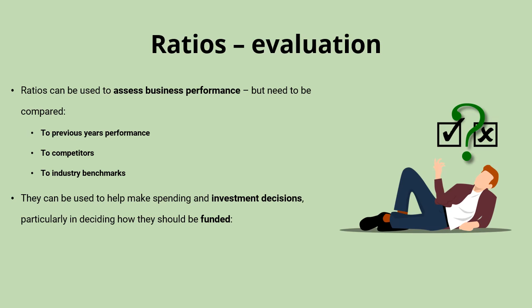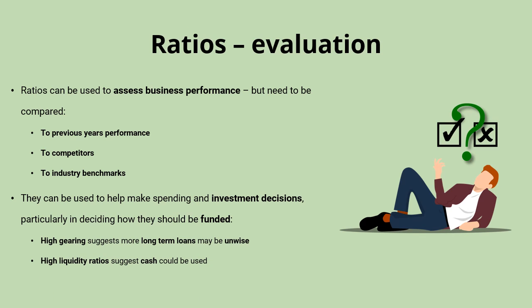Ratios can also help us make spending and investment decisions. If we have very high gearing, that would suggest taking out even more long-term loans might be unwise, leaving us vulnerable to increasing interest rates. If we have very high liquidity ratios, that might suggest we could use cash to fund investments — if lots of resources are tied up in cash and not generating any return, why not use it for more profitable investments? And if we have very high profitability ratios, it might suggest we could use retained profit, which is a great source of funding as it requires no interest payments and doesn't dilute ownership.